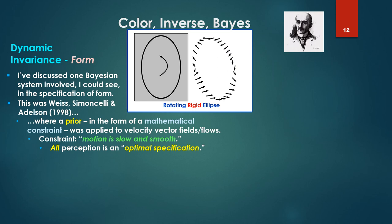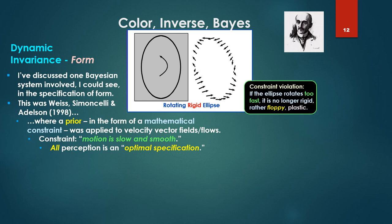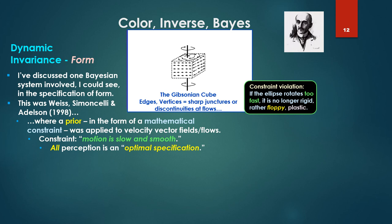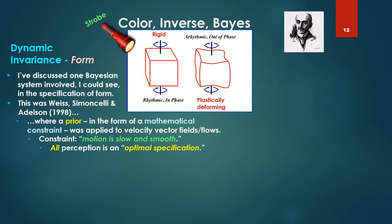And the constraint was motion is slow and smooth, and it was applied to these fields. And generally they argued all perception is an optimal specification based on the application of these constraints and probabilistic estimates of these fields. So one example was this rotating rigid ellipse. Rotating at a slow enough speed, it's perceived as rigid, as a rigid ellipse. But note that its perimeter is all resolvable into velocity vectors. And there's a constraint violation. If the ellipse rotates too quickly, too fast, it is no longer rigid but rather floppy, plastic, rubber, rubbery.